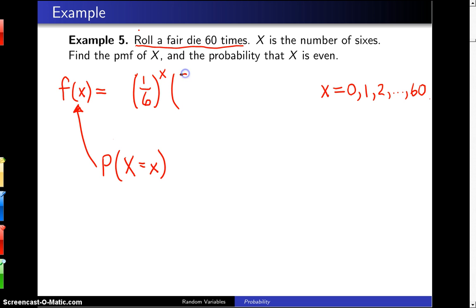But there are also non-sixes, and the probability of rolling a non-six on a single toss is five-sixths. And if we get X sixes, then we get 60 minus X non-sixes.